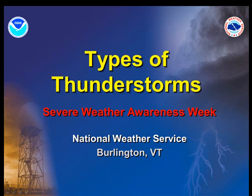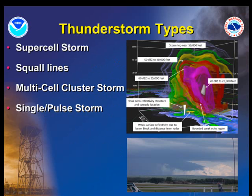Despite their small size, all thunderstorms are dangerous. The four types of thunderstorms we are going to discuss include supercells, squall lines, multicell clusters, and single cell. Which type forms depends on the instability and relative wind conditions at different layers of the atmosphere.